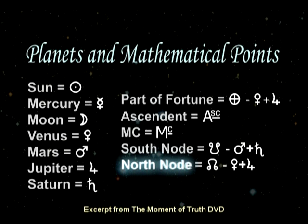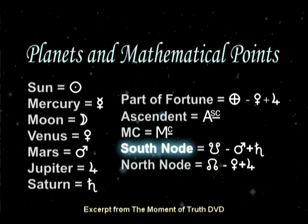The north node is very much likened to Venus and Jupiter, and is beneficial to any sign or house it is placed in. The south node is more attritional and similar to Mars and Saturn, and is destructive to any sign or house it is placed in.